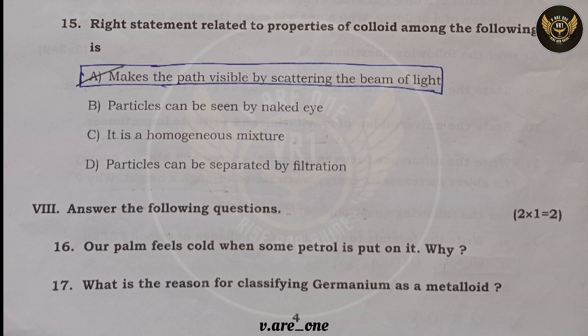Question sixteen: why does our palm feel cold when petrol is put on it? Because during evaporation from the palm, petrol absorbs heat from the palm, which is why we feel cold. Question seventeen: why is germanium classified as a metalloid? Because germanium acts as both a metal and a non-metal — it shows properties of both — so it is considered a metalloid.